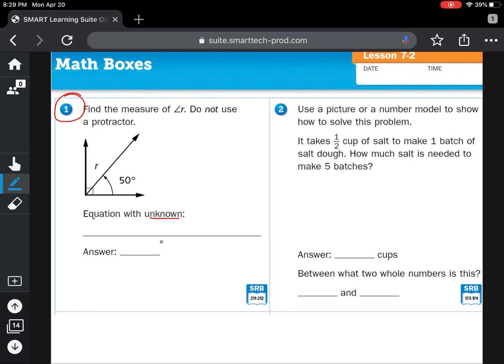Then for number two, it says you're going to use a picture or a number model to show how to solve this problem. It takes one half cup of salt to make one batch of salt dough. How much salt is needed to make five batches?